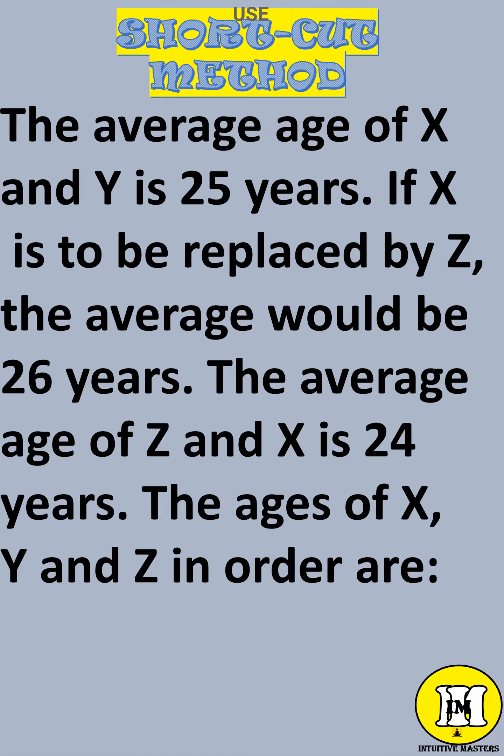Average. The average age of X and Y is 25 years. If X is to be replaced by Z, the average would be 26 years. The average age of Z and X is 24 years. The ages of X, Y, and Z in order are?